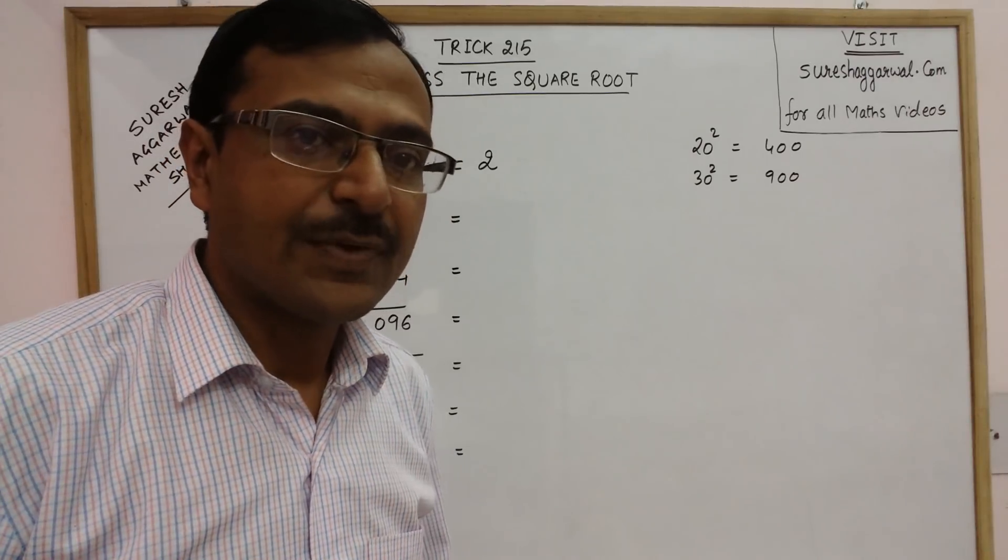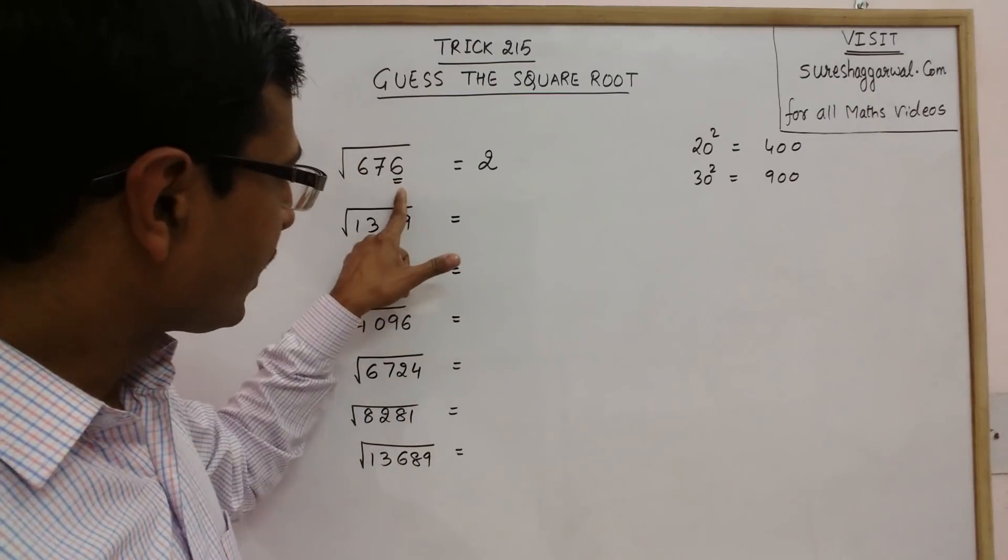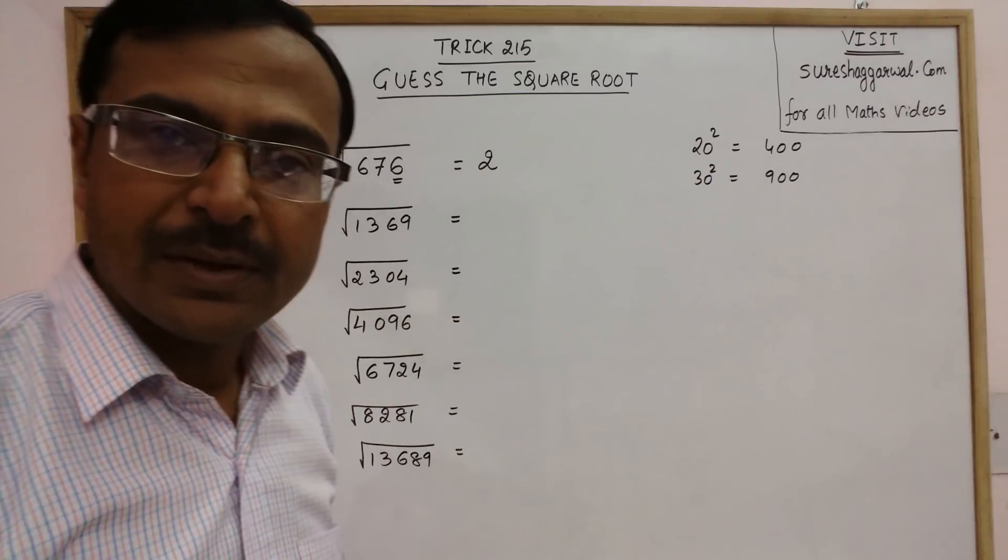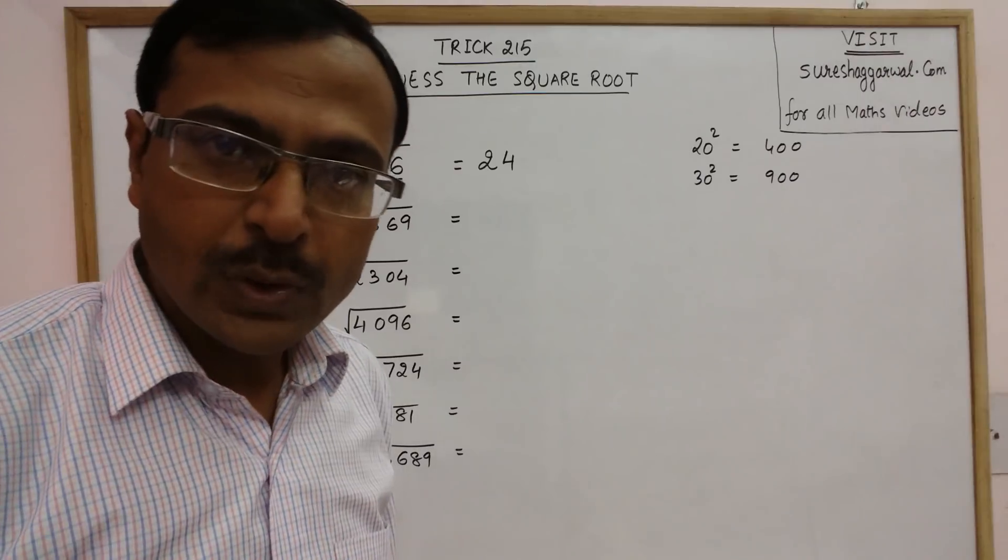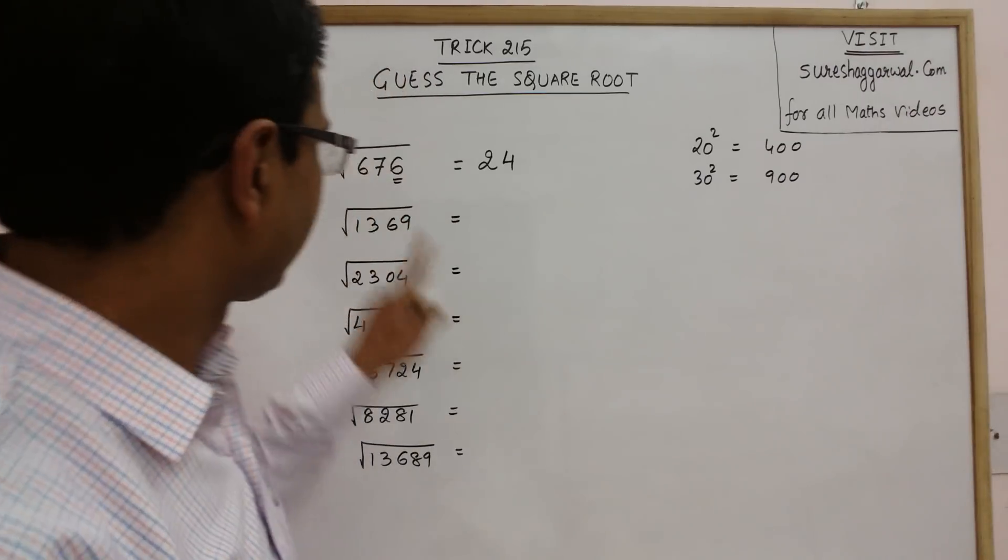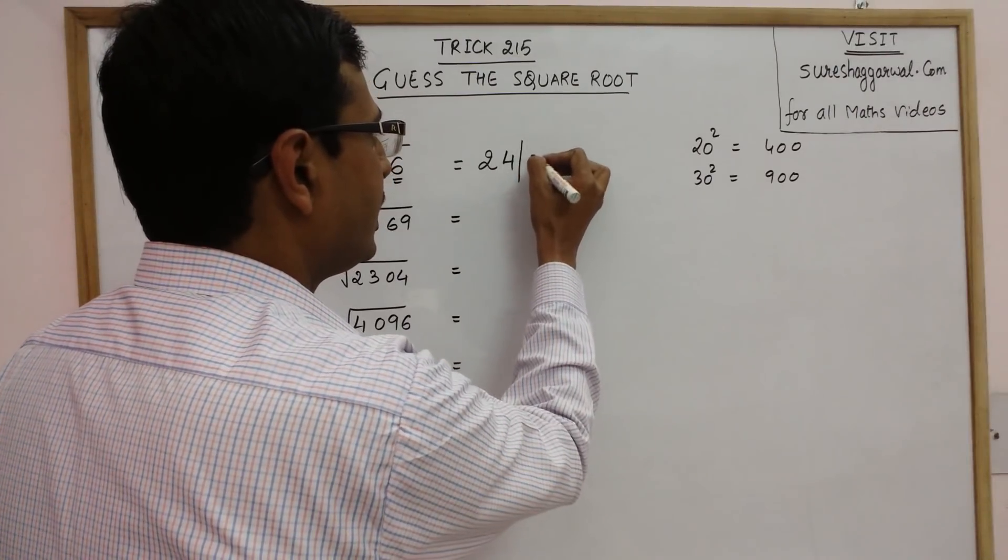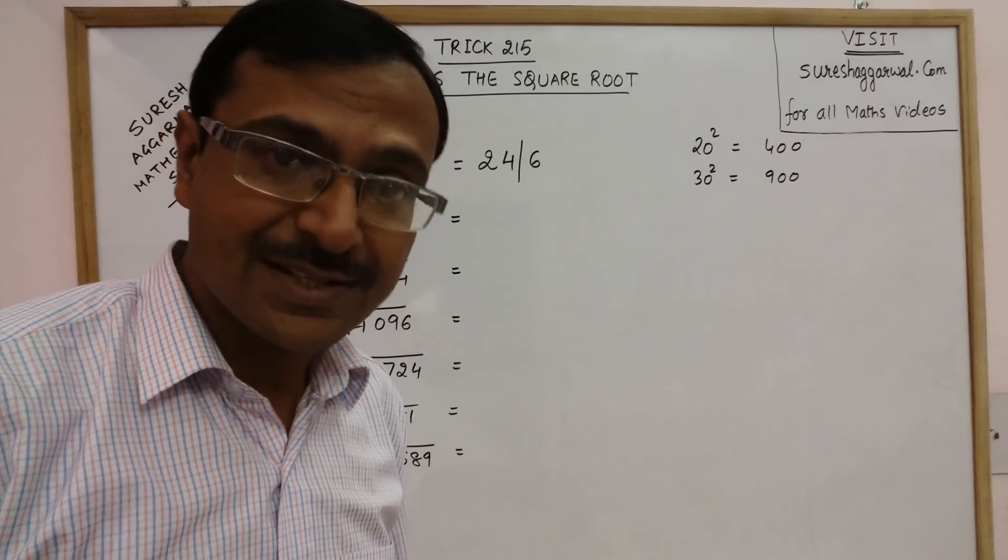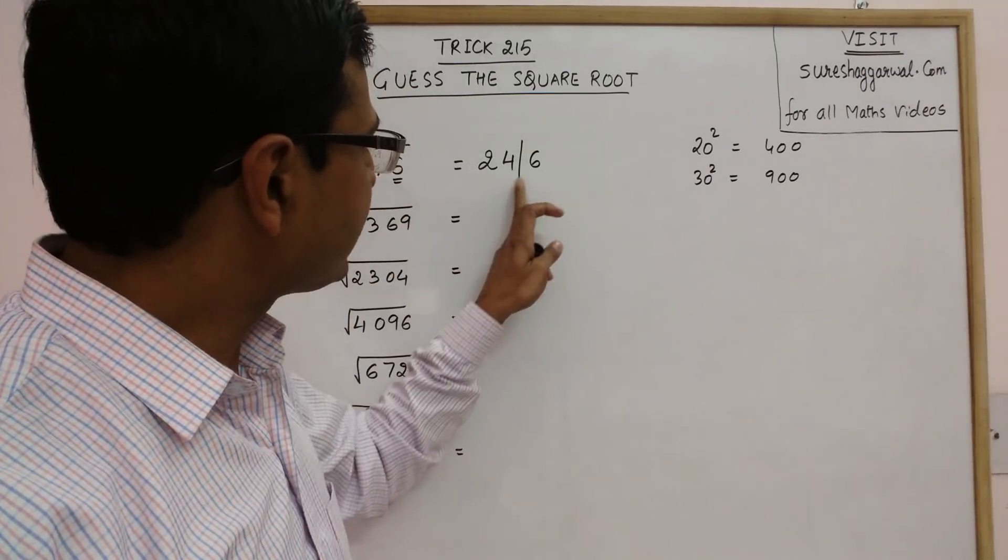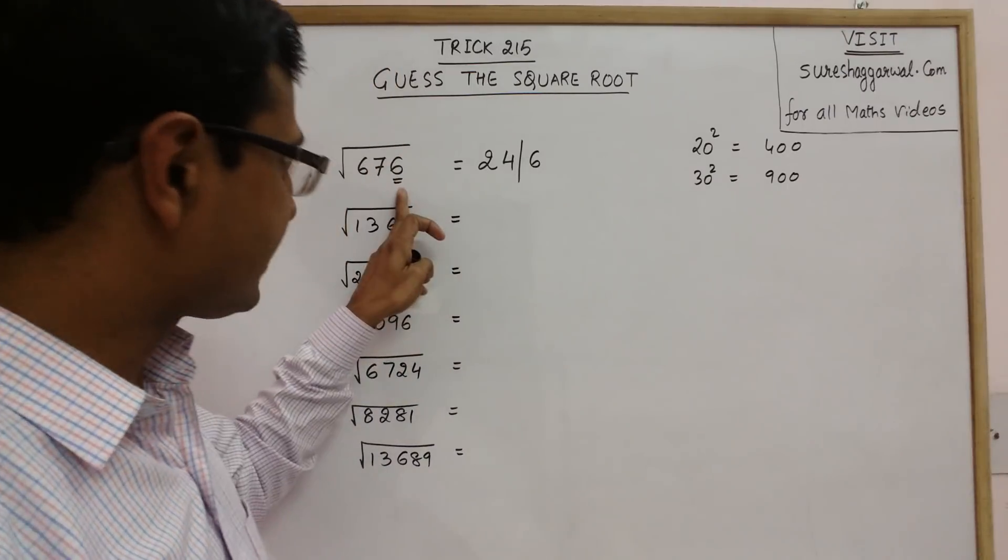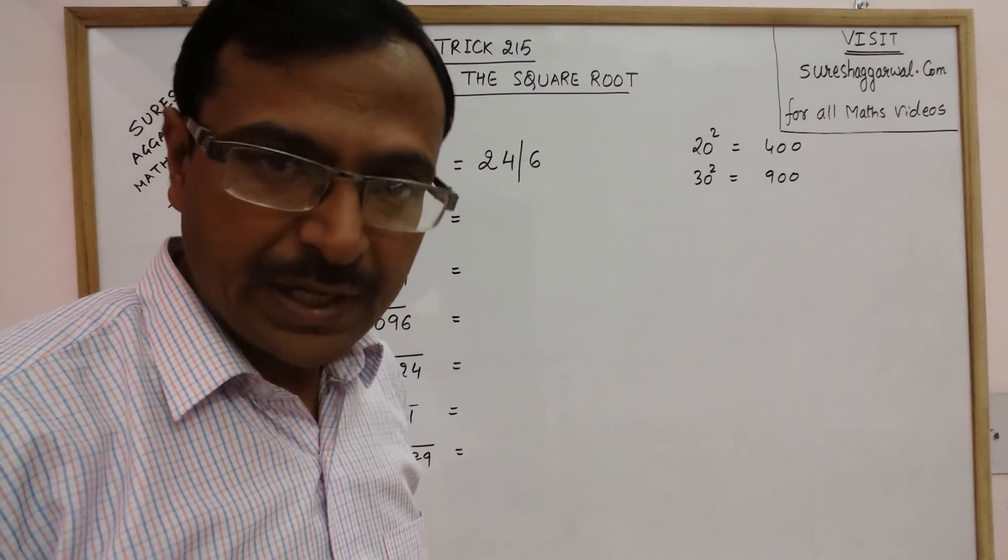Now that one digit can be guessed very easily because just see the unit digit here, the unit digit is 6. So the next number is either 4 because 4 square is 16 so unit digit is 6, or it can be 6 because 6 square is 36, again the unit digit is 6. There are only two numbers 4 and 6 whose squares end with 6. So either our answer is 24 or our answer is 26.